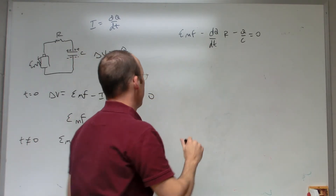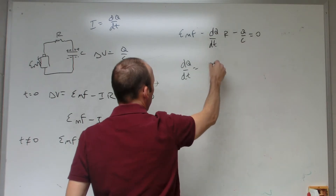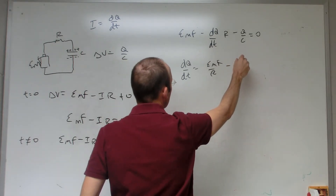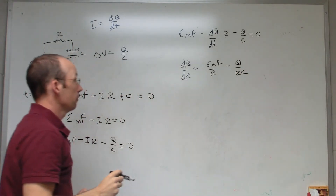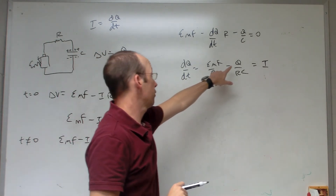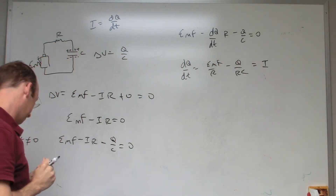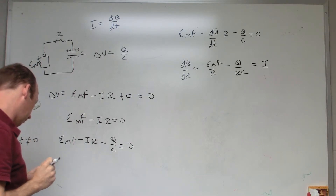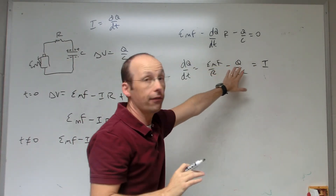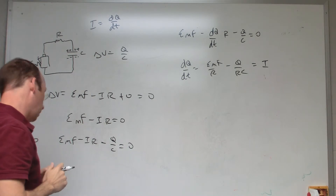Q is not constant — it changes with time. Rewriting the loop rule: EMF minus (dQ/dt)·R minus Q/C equals zero. Instead of writing I, I substituted dQ/dt. Solving algebraically for dQ/dt: I get EMF/R minus Q/RC, which equals the current. But it's not constant because Q is not constant. This is a differential equation with both dQ/dt and Q.